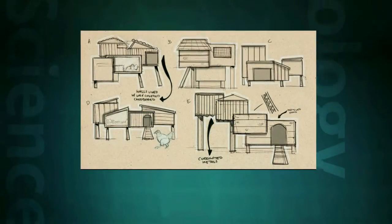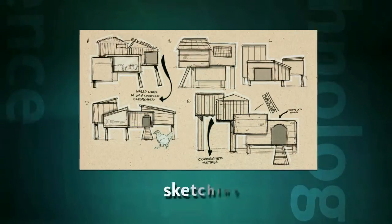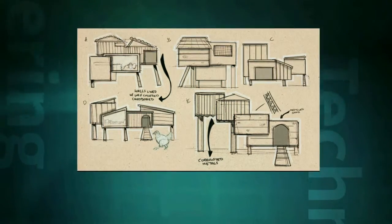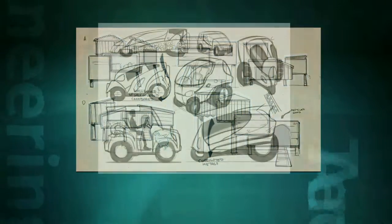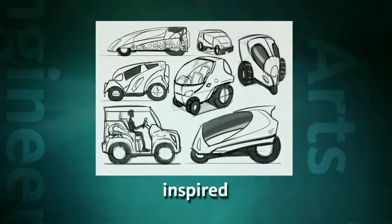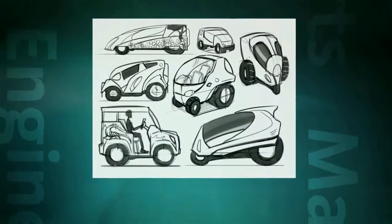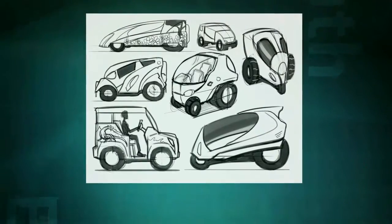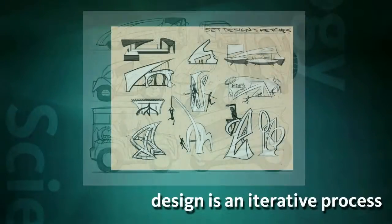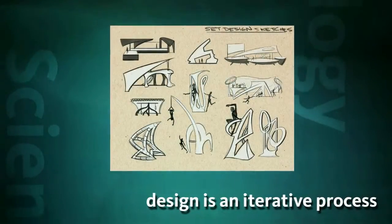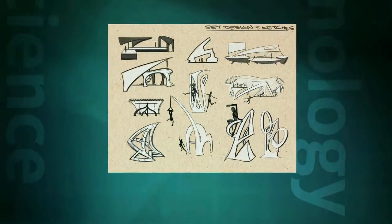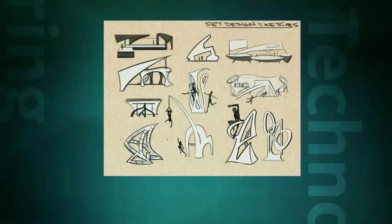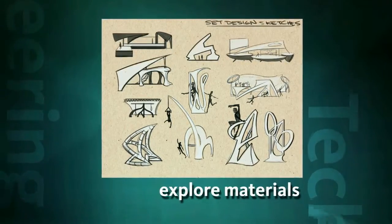Onto the ideate stage — it's all about creativity. Sketching and hands-on activities like creating paper models and mood boards are crucial in the ideate phase. Keep students inspired; no drawing is a bad drawing. You can always start to explore shapes and process in the software at this stage. Remember, design is an iterative process. The ability to communicate a concept is a vital aspect of this design cycle, and students should explore materials also.